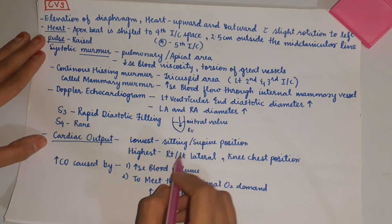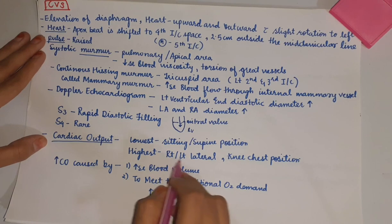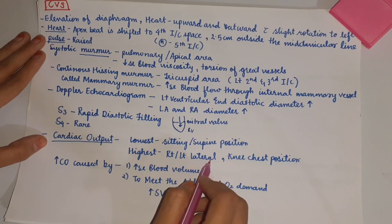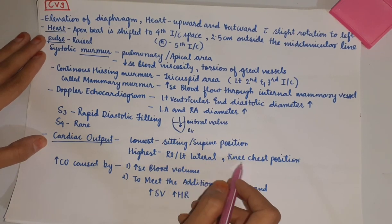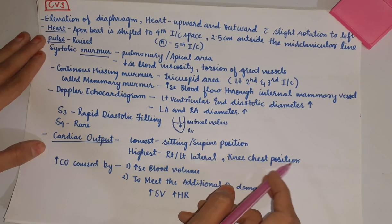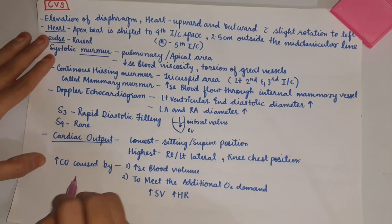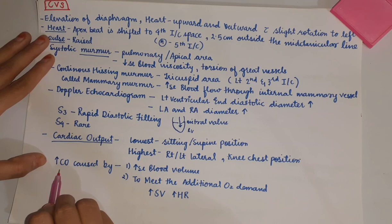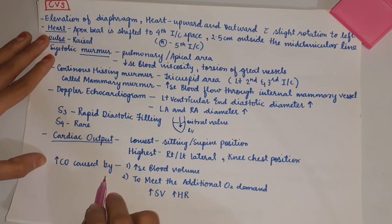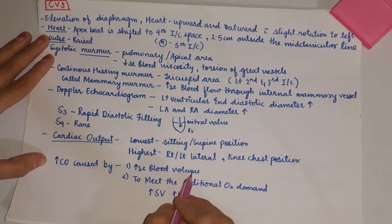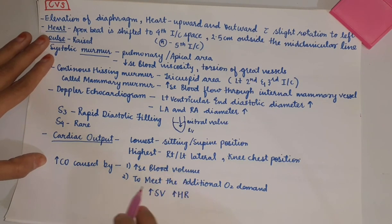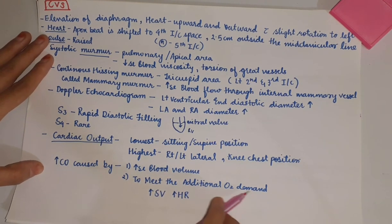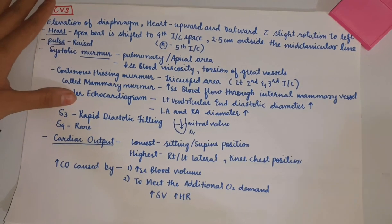Cardiac output is lowest in the sitting or supine position and highest in the right or left lateral position or knee-chest position. Increased cardiac output occurs due to increased blood volume and to meet the additional oxygen demand.